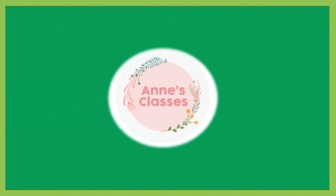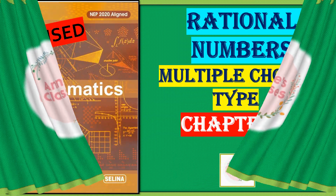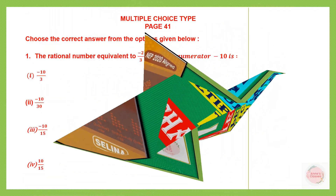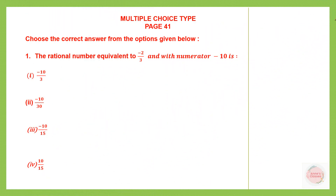Hello students, welcome back to ANT's classes. Rational numbers, the multiple choice type, chapter 2, and this is from the revised edition. Multiple choice type is on page number 41. Choose the correct answer from the options given below. So we have the first question here and we have four options. We are going to choose the correct one.